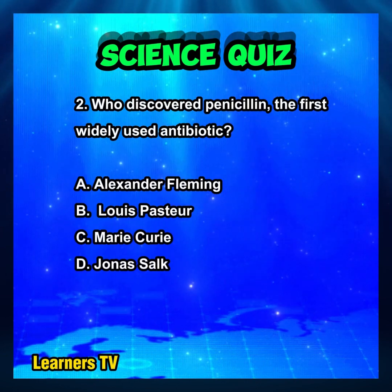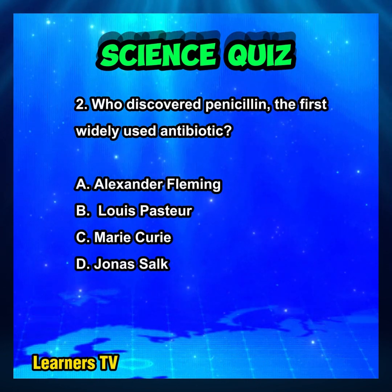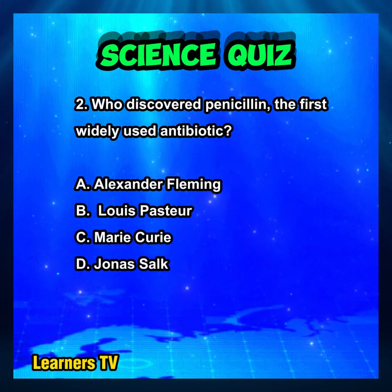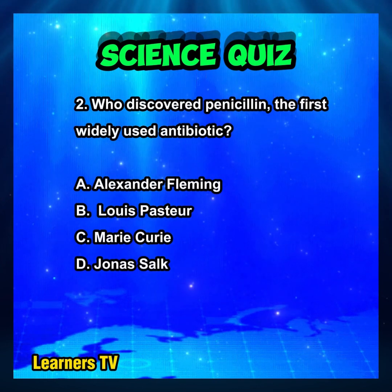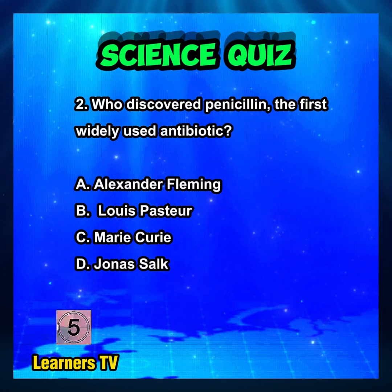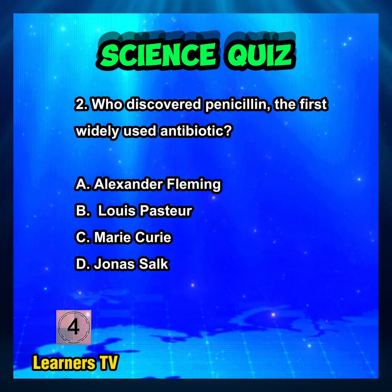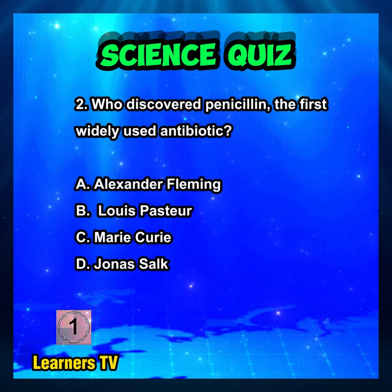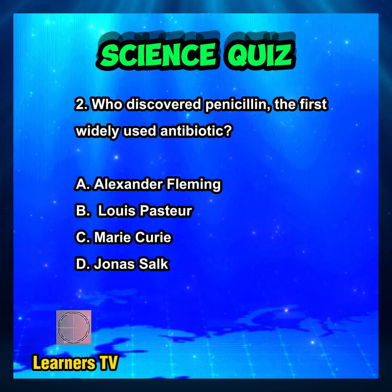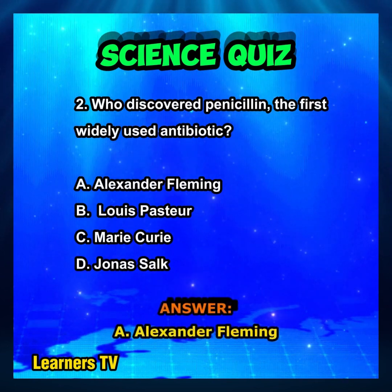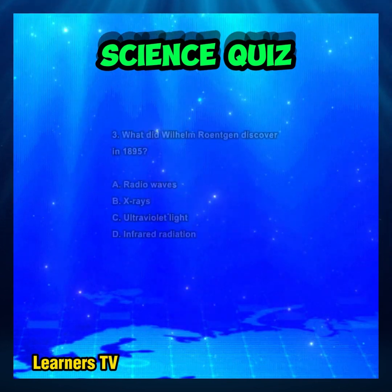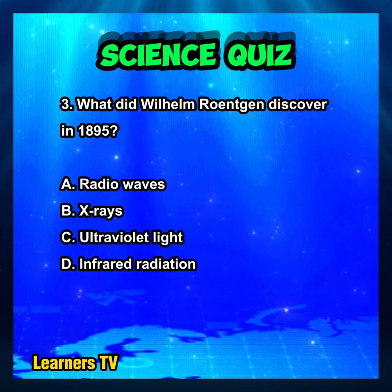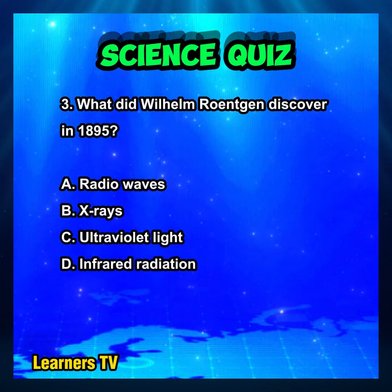Who discovered penicillin, the first widely used antibiotic? A. Alexander Fleming. B. Louis Pasteur. C. Marie Curie. D. Jonas Salk. The answer is A. Alexander Fleming.